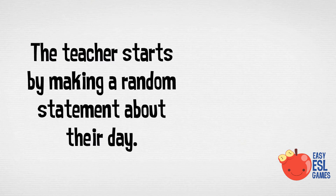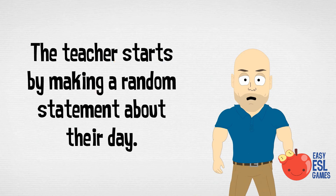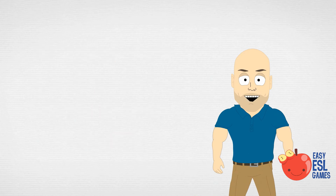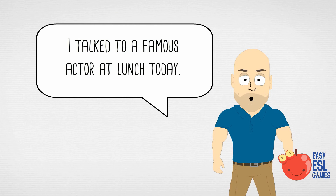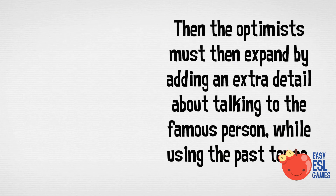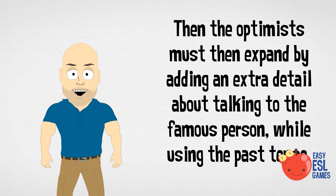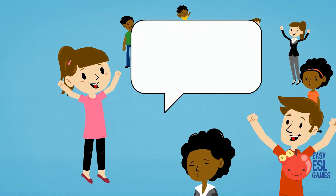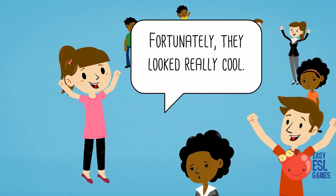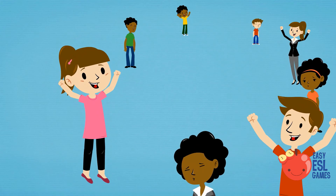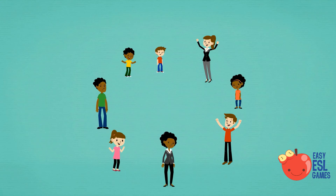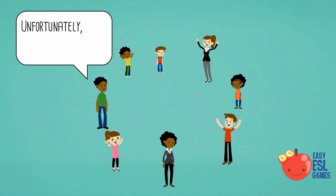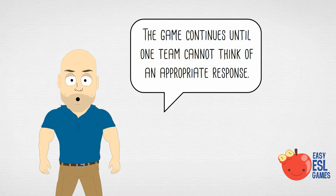The teacher starts by making a random statement about something that happened earlier in the day. For example: 'I talked to a famous actor at lunch today.' Then the optimists must expand on the story by adding an extra detail about talking to that famous person while using the past tense — for example, 'Fortunately, they looked really cool.' The pessimists must then follow up by adding a negative element to the story — 'Unfortunately, they smelled really bad.' The process continues until one team cannot think of an appropriate response.